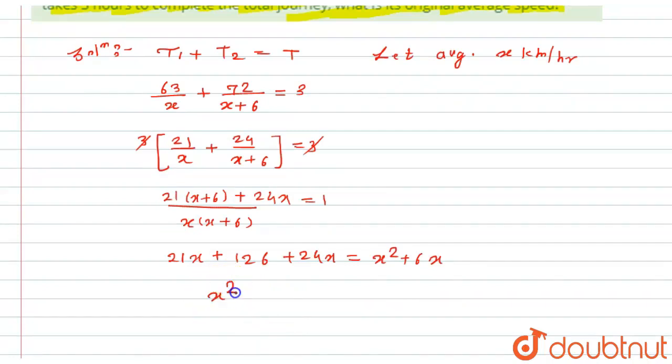x squared plus 6x minus 45x minus 126 equals 0. Now I will minus 45x from 6x, so it will be...